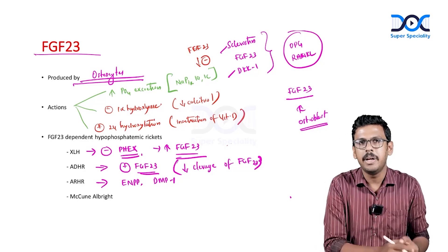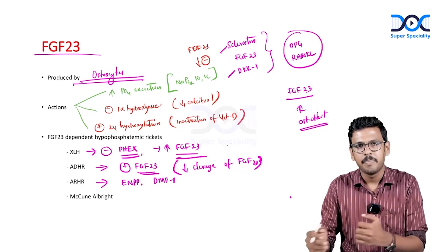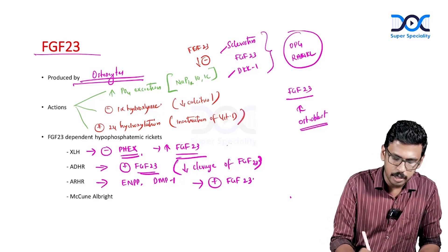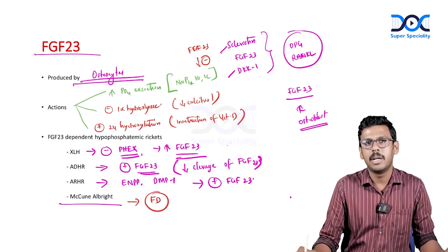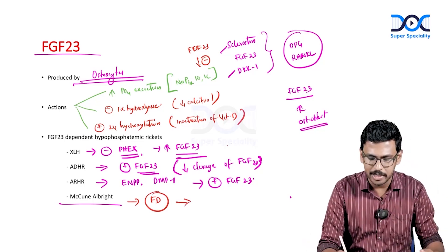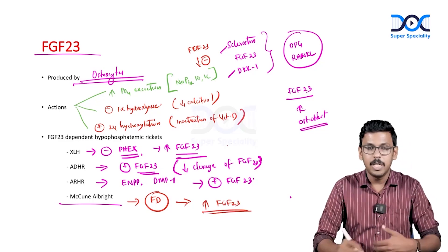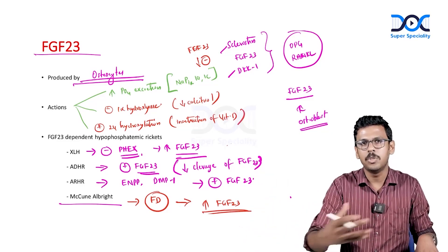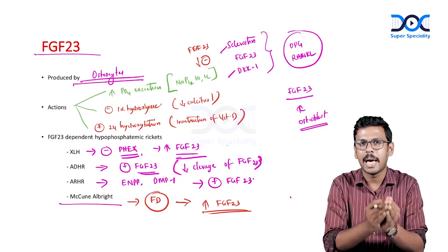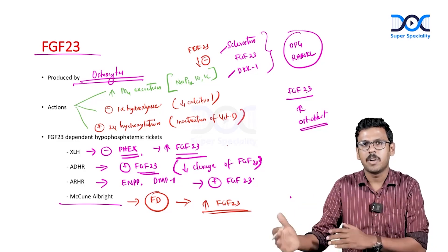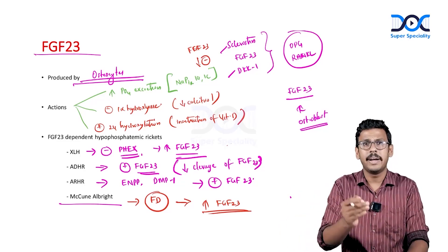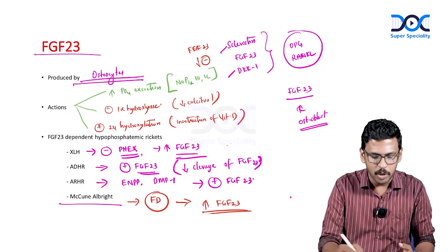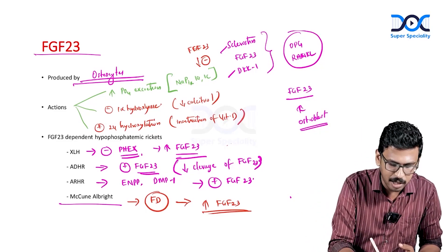For autosomal recessive hypophosphatemic rickets, learn two important mutations: ENPP (ectonucleotide pyrophosphatase gene) and DMP1 (dentin matrix protein 1 gene) — both potentiate FGF23 activity. In McCune-Albright syndrome, fibrous dysplasia is the cardinal bone manifestation, and dysplastic osteocytes produce excessive FGF23. Tumor-induced osteomalacia is an acquired condition where mesenchymal tumors produce FGF23 as a paraneoplastic manifestation, causing adult-onset hypophosphatemia and osteomalacia.